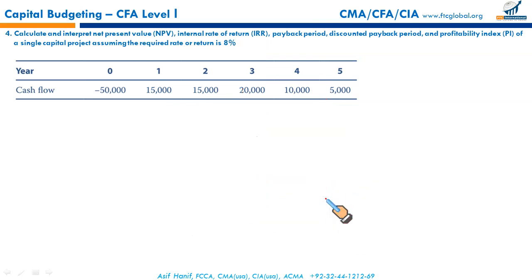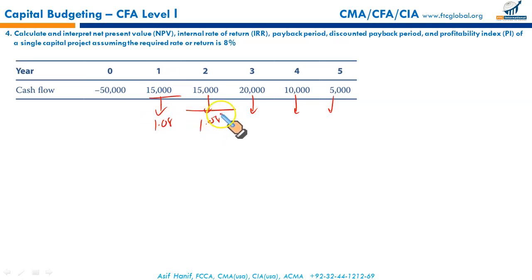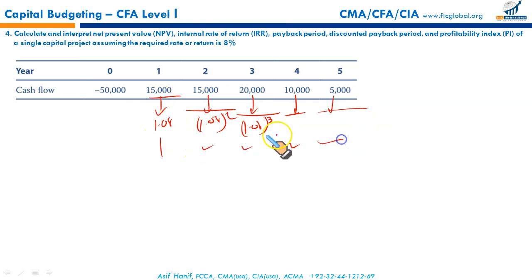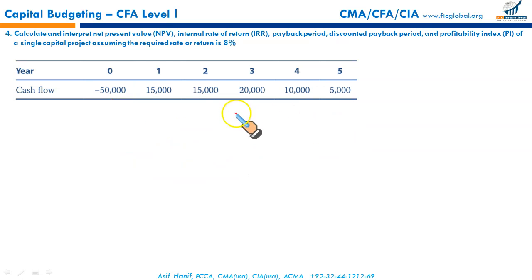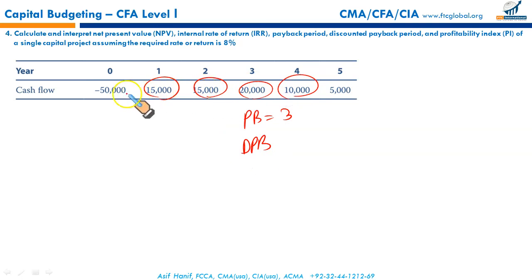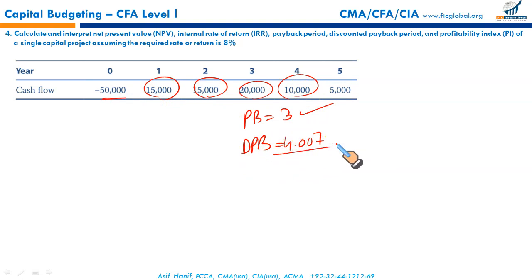The discounted payback period involves discounting cash flows into present terms. Convert all cash flows to present value: $15,000 divided by 1.08, then divided by 1.08 squared, $20,000 divided by 1.08 cubed, and so on. Using those discounted numbers, determine at which point the initial investment has been recovered. The payback period is 3 years, but on a discounted basis, you take 4.007 years to recover your initial investment — that is the discounted payback period.